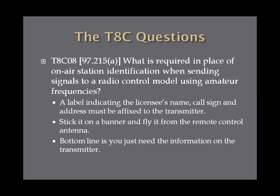What is required in place of on-air station identification when sending signals to a radio-controlled model using amateur frequencies? The answer is: a label indicating the licensee's name, call sign, and address must be affixed to the transmitter. Some operators take a banner or flag and stick it on the antenna of their controller with this information. The bottom line is you just need to have the information on the transmitter somewhere to be in compliance.